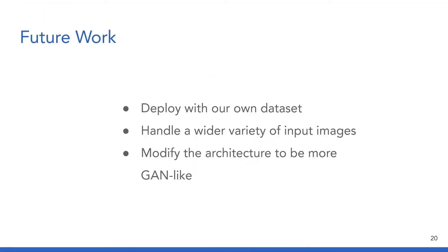In the future, we hope to deploy with models trained on our own dataset, make modifications so that we can handle a wider variety of input images and more gracefully handle failure cases, and use an architecture more similar to ones used for image-to-image translation. We'd also like to modify the Rignet architecture to be more GAN-like so that it can generate a variety of output graphs from any single input graph. In the meantime, while we wait for training to finish, please check out our demo.